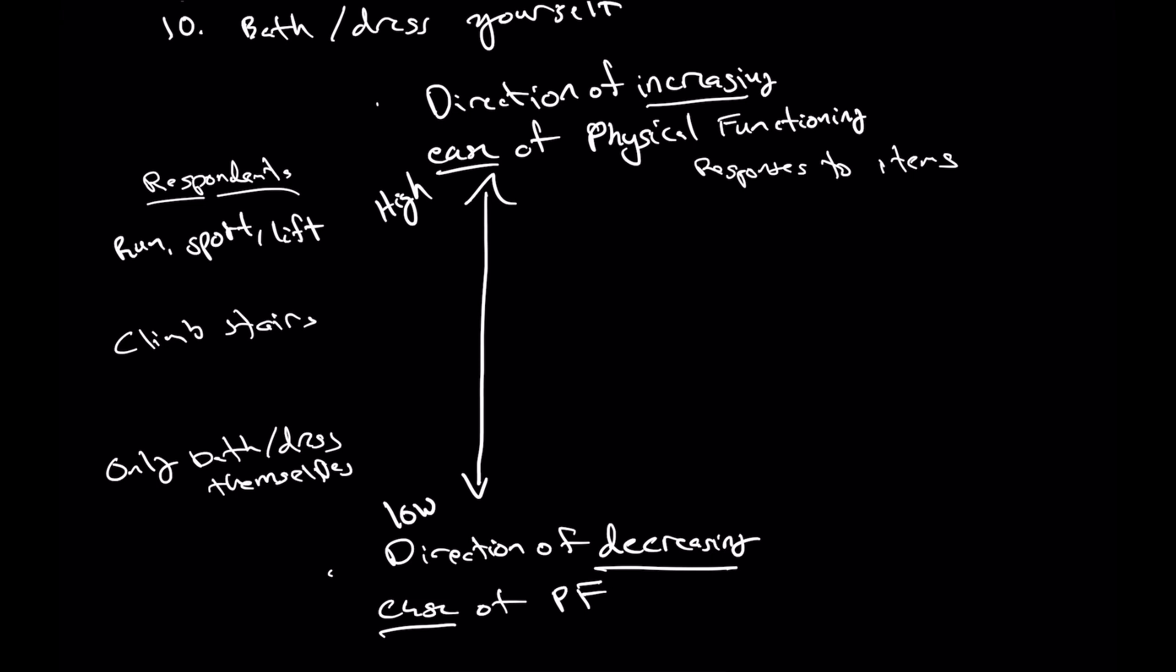This is one of the really useful parts of developing a construct map. This really helps you try to understand what are the characteristics of people. In the case of this assessment of physical functioning, it maps on almost directly to the items that we're using.